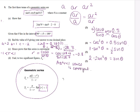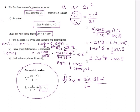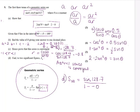And then for part D, we're just plugging numbers into the formula. So the sum to infinity will be my a, which is sin(128.7), over 1 minus my r, so it's 1 minus minus 0.8. When I plug that in, I get 0.43. I hope that's been useful and I really hope something similar comes up for you guys.